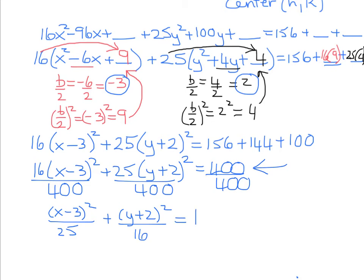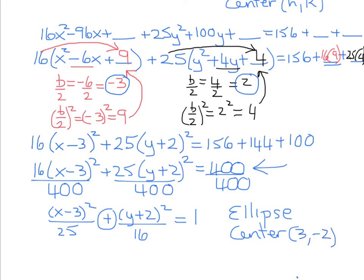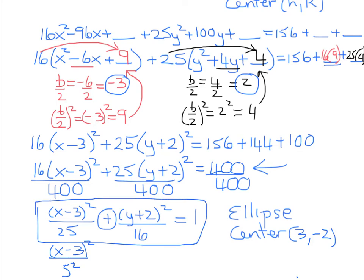This is the standard form of an ellipse. We know it's an ellipse and not a hyperbola because of the plus sign. The center is found by taking the opposite of each number: x-coordinate is the opposite of negative 3, which is positive 3; y-coordinate is the opposite of positive 2, which is negative 2. So the center is at (3, −2). Writing 25 as 5 squared tells us we go 5 units left and right from the center, and 16 as 4 squared tells us we go 4 units up and down.